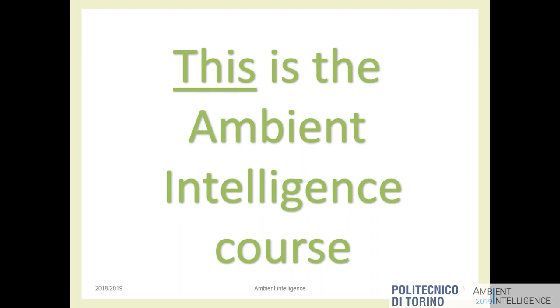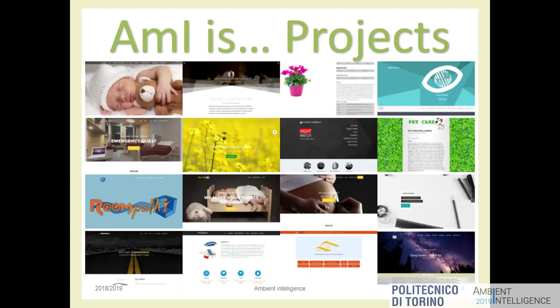Just a quick glance about what this course is — the main points of organization and content. The Ambient Intelligence course is projects-based. What we are doing together in the next 60 hours — plus many more on your side — are projects. You will work with your friends to create, implement, prototype, and present practical projects. Every group will develop their own project that they will choose and select.